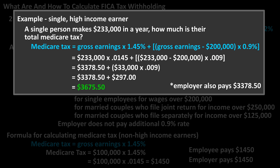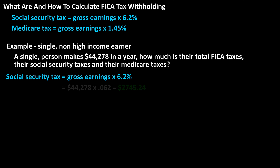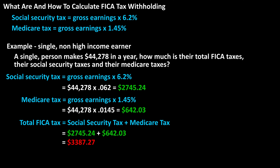The calculations total to $3,675.50 in Medicare taxes. As an example, let's say that an employee earns $44,278 in a year — not a high income earner. What is their total FICA taxes, their Social Security taxes, and their Medicare taxes? Using our formula for Social Security taxes, we have $44,278 times 0.062, which equals $2,745.24. And their total FICA taxes would be $2,745.24 plus $642.03, which equals $3,387.27.